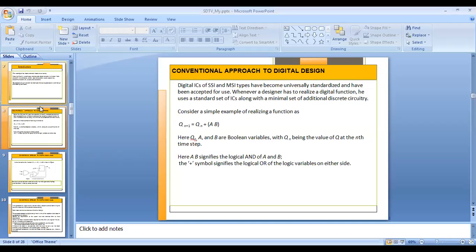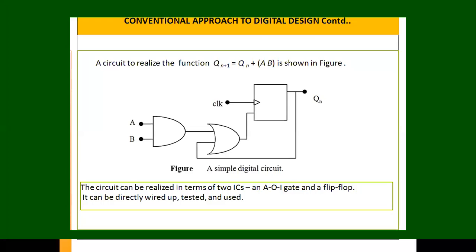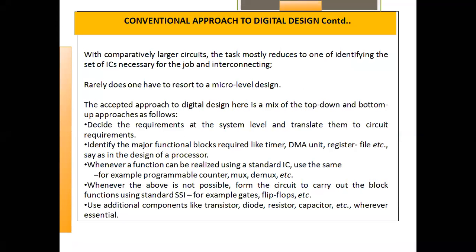We are seeing the conventional approach of digital design, which we have already seen. In this process, as an example, Q(n+1) = pn + a·B. Here we are using two ICs as input: one is an AND gate and another one is the flip-flop. We require the flip-flop here to store the output value we get from the AND gate.